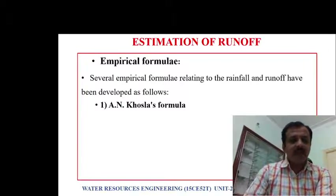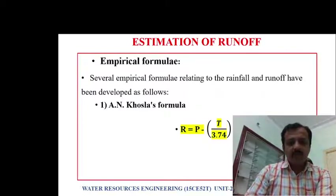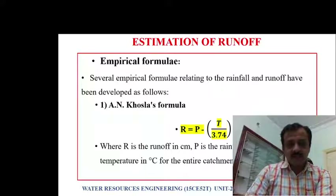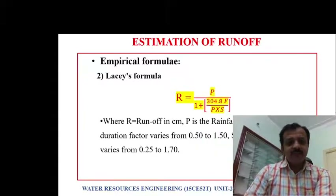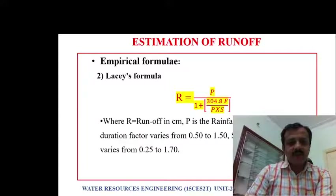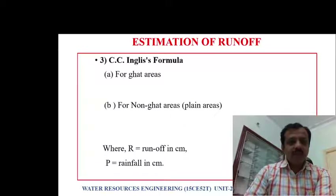In the empirical formula method, the first formula is Khosla's formula: R = (P − T) / 3.74, where R is runoff in centimeters, P is rainfall in centimeters, and T is mean temperature in degrees Celsius for the entire catchment area. The next is Lacey's formula: R = P / (1 + 3304.8 × F / (P × S)), where F is the monsoon duration factor (0.5 to 1.5) and S is the catchment factor (0.25 to 1.7).